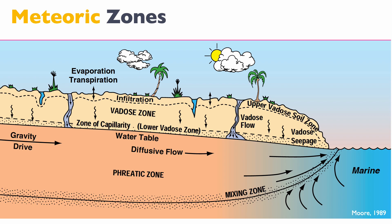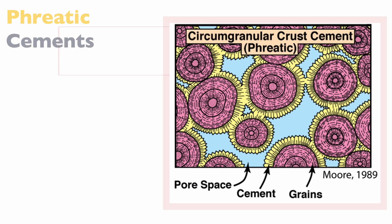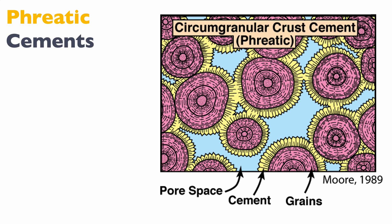We can distinguish two main zones in the meteoric environment, and the distinction is based on where they sit with respect to the water table. First, we have the phreatic zone, which is below the water table and is characterized by being saturated with meteoric water. Water everywhere leads to the deposition of a lot of cements formed all around the grains, known as circumgranular crusts of cement, which is really typical for the phreatic zone.